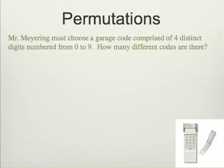So, the first thing we look at is permutations. Once again, we're talking about how we arrange, how we choose things out of a set. For example, a great permutation question would be if I have to choose a garage code comprised of four distinct digits numbered from zero to nine. If that's the case, how many different codes are there that I could possibly choose from?